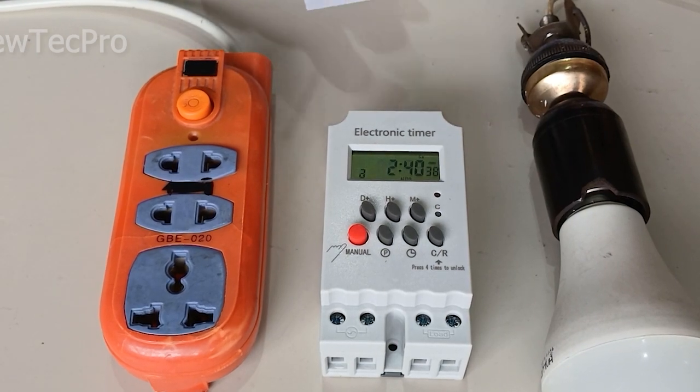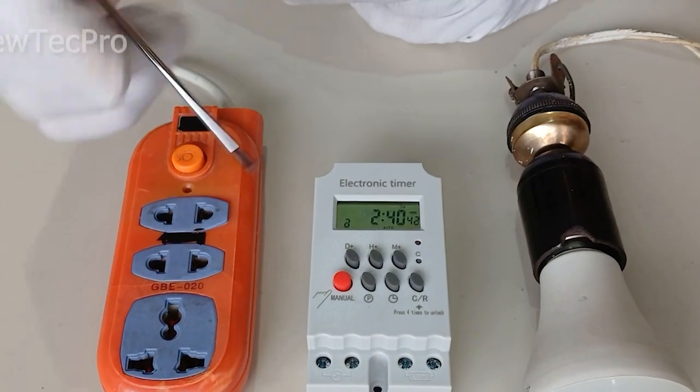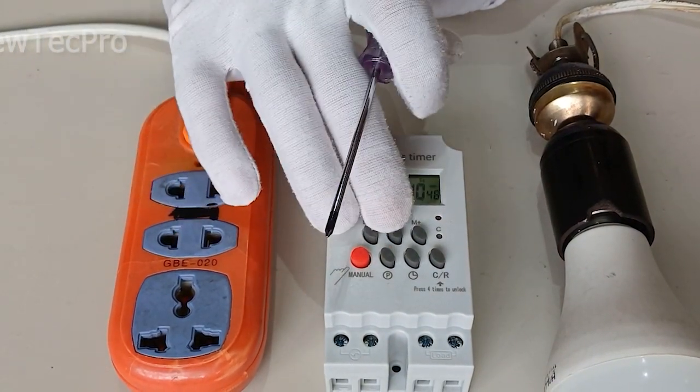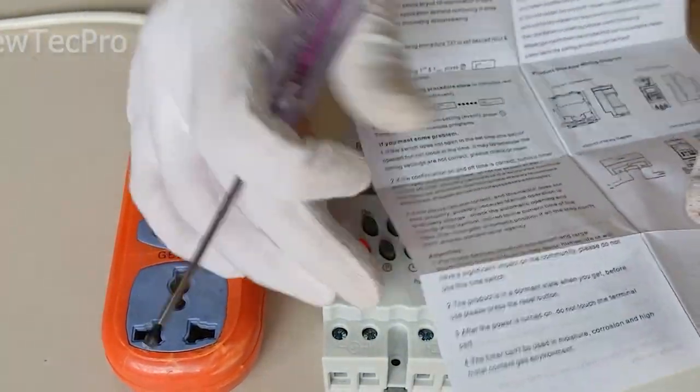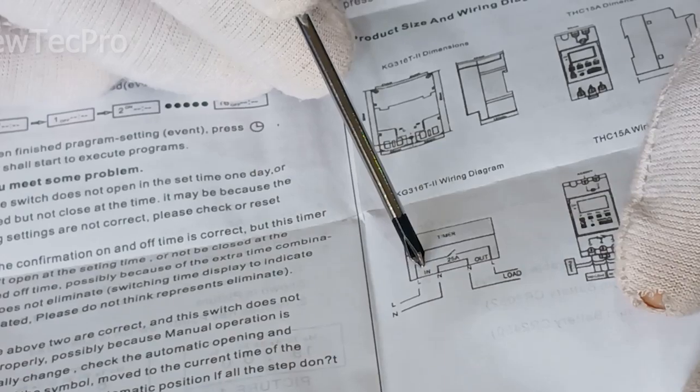To start installation, we must first connect the electricity of the house to the timer input. Timer input, as you can see here.